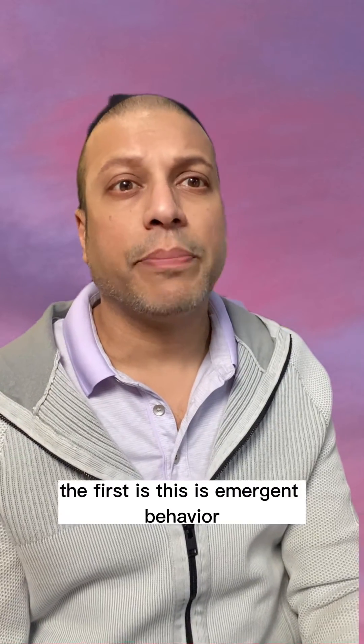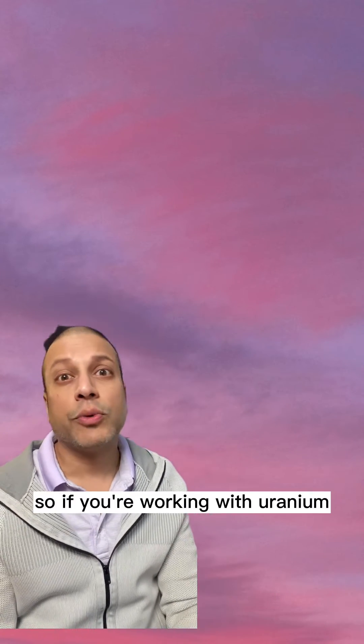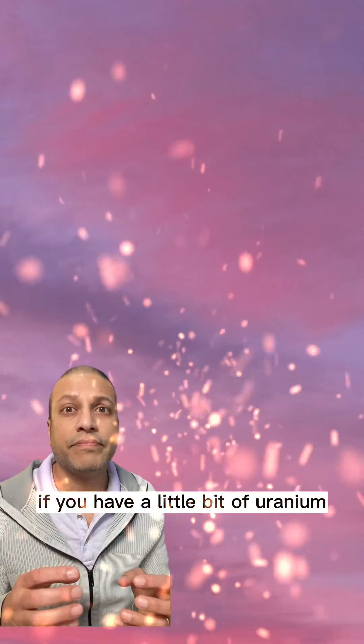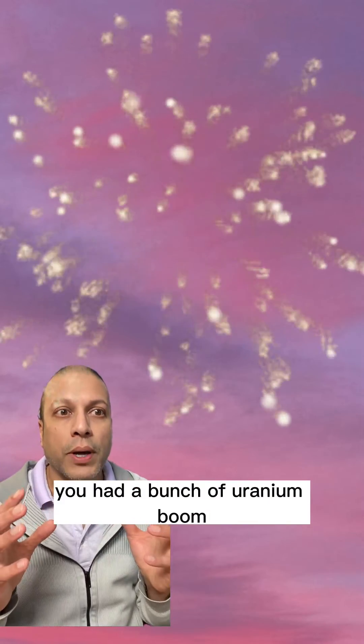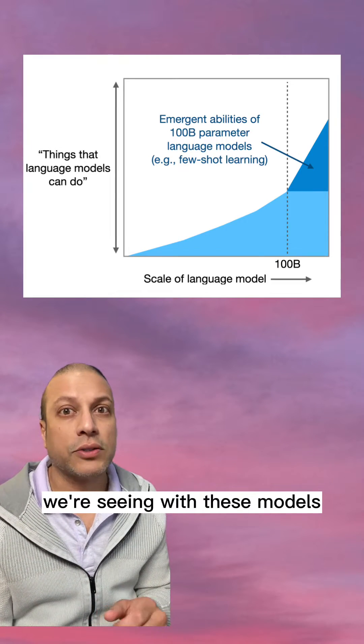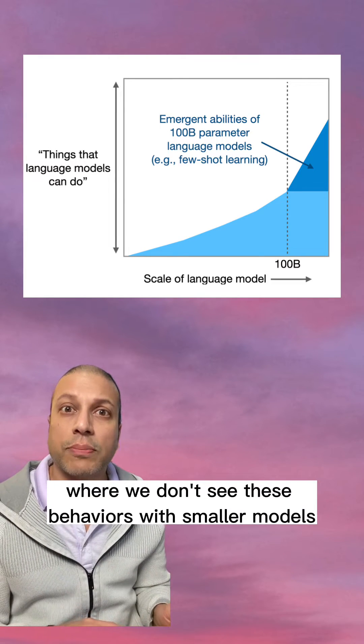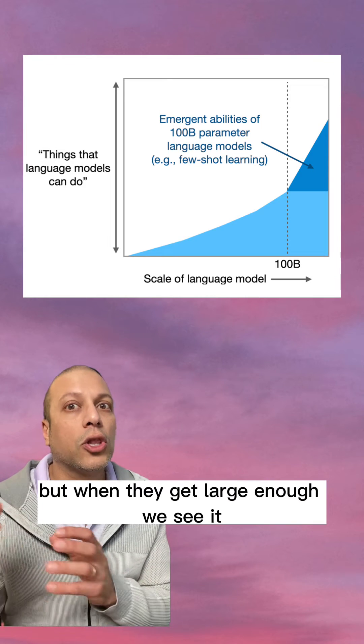The first is, this is emergent behavior. So if you're working with uranium, if you have a little bit of uranium, it's not going to do anything. You add a bunch of uranium, boom. This is the same type of behavior we're seeing with these models, where we don't see these behaviors with smaller models, but when they get large enough, we see it.